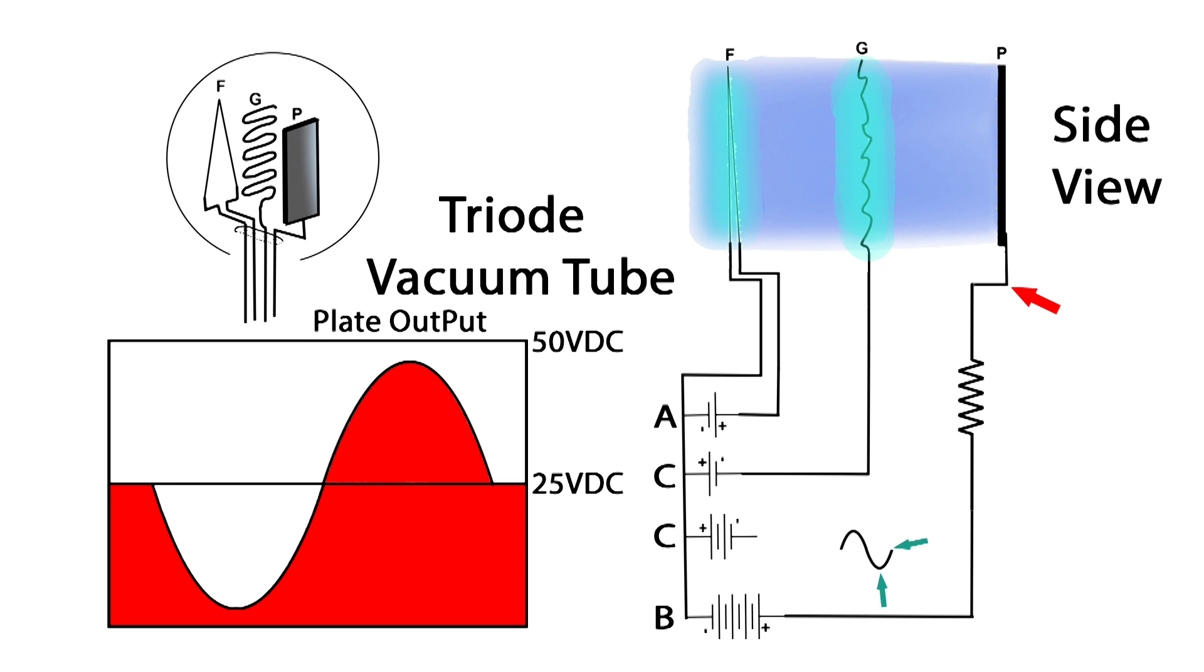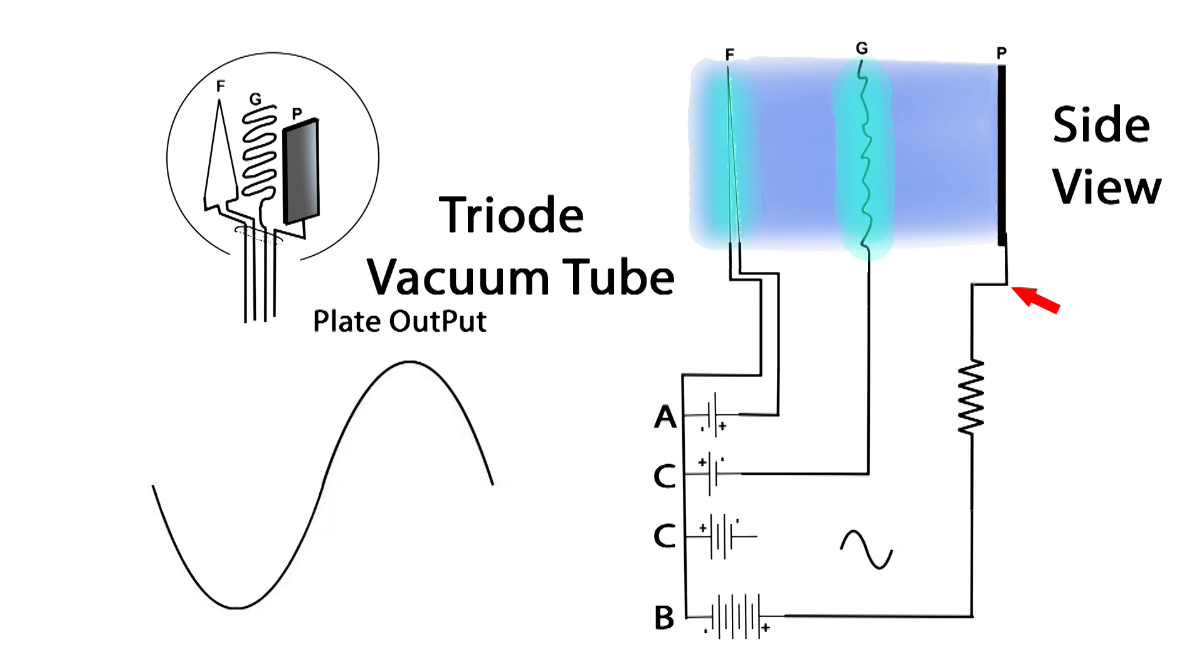Now, if we were to hook up a capacitor, a coupling capacitor, to the plate for the next stage of amplification. What we would see on the other side of the capacitor that's going to the next stage is this. Capacitors block DC and allow AC to travel through.